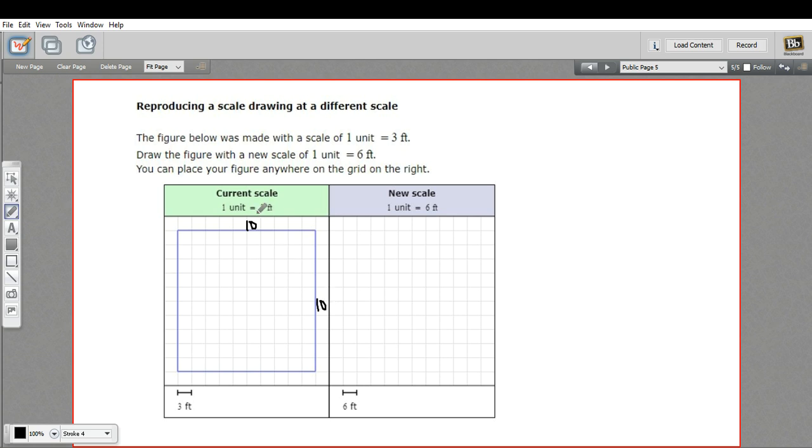But if a unit is three feet, then we multiply 10 by 3, we get 30 feet by 30 feet. So that's how big the real object is: 30 by 30.